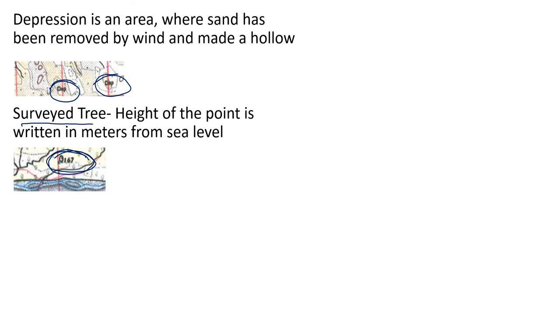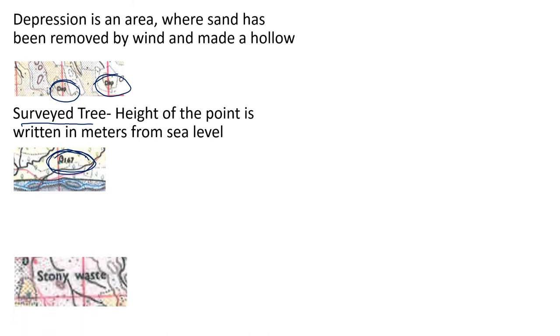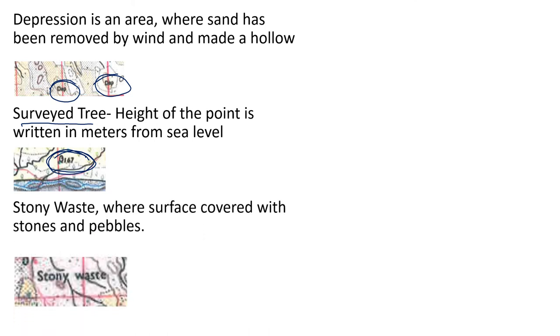For a survey tree, the height of that particular point is written in meters — for example, 167 meters from sea level. These trees are protected and nobody can cut them as they serve as survey markers. Stony waste means an area where the surface is covered with stones and pebbles, making it a wasteland.